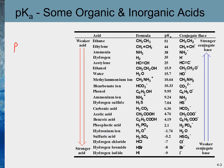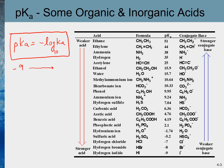The pKa of any acid can be calculated using the expression: pKa is equal to the negative log of Ka. Remember, this is the log with base 10, not the natural log. pKa values of acids vary from negative 9 to positive 50. A smaller pKa value means a stronger acid, and a larger pKa value means a weaker acid.